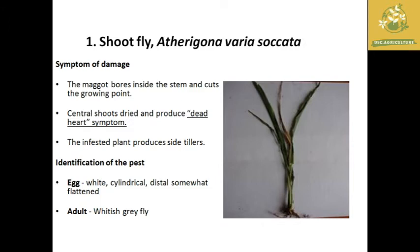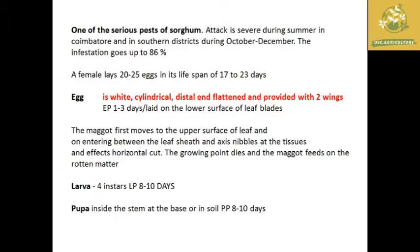For identification, the adult is a whitish grey fly and the eggs are white, cylindrical, and distally somewhat flattened. It is a major and serious pest of sorghum, mainly attacking during summer in Coimbatore and in southern districts during October to December. Infestation can go up to 86 percent crop loss in severe conditions. A female can lay up to 20 to 25 eggs in its lifespan of around 17 to 23 days.